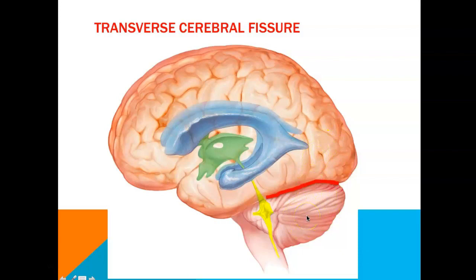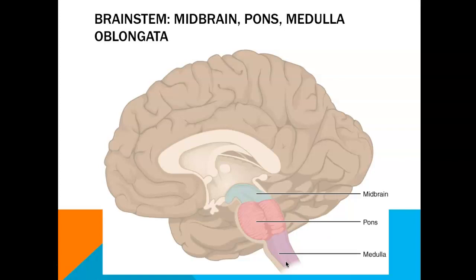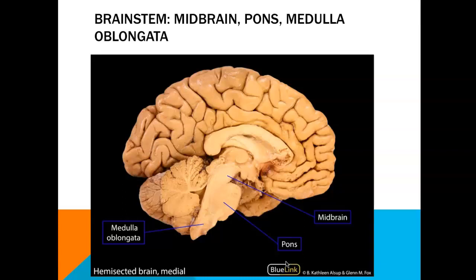Later we'll talk about some important dural folds that lie within this area. Here is our cerebellum. Here is a mid-sagittal view of the brain where we can see the midbrain, pons, and medulla oblongata of the brain stem. I wanted you to be aware of what this looks like in a mid-sagittal view so that we understand how we can view it from different perspectives.